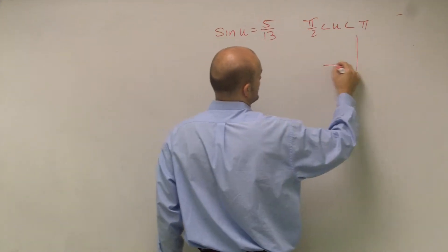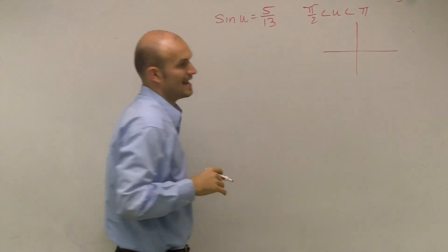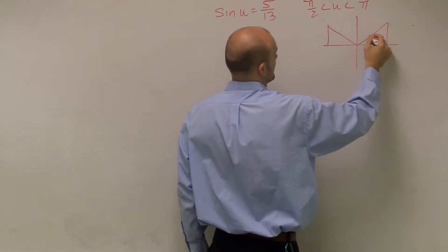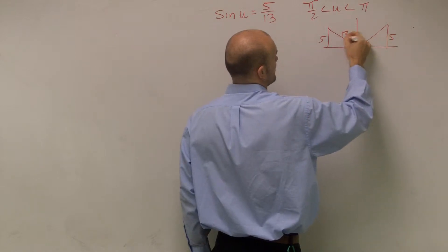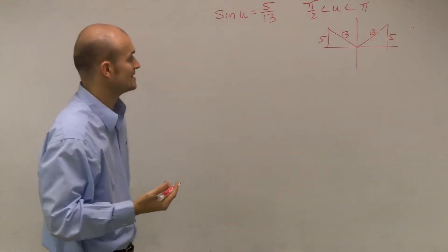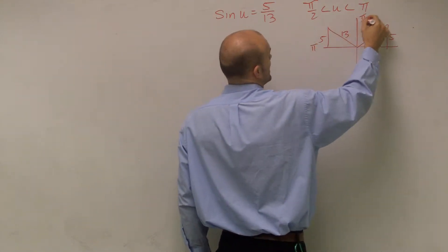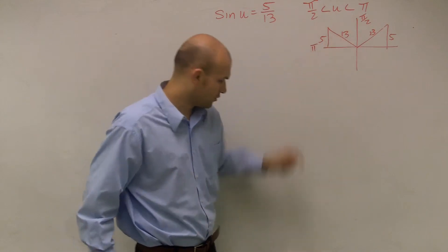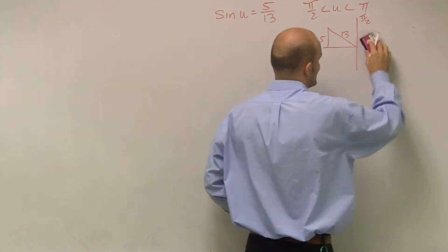Let's go ahead and write this out. If the height has to be 5, there are two kinds of triangles I could draw — with sides 5 and 13, where 13 has to be the hypotenuse or radius. However, since u has to be between π/2 and π, this is the only triangle I can use, so I'll erase the other one.